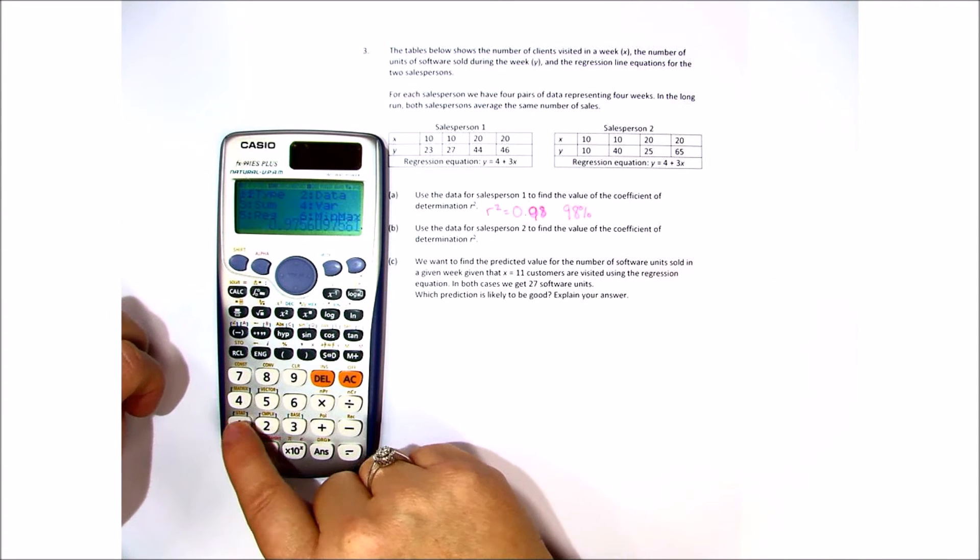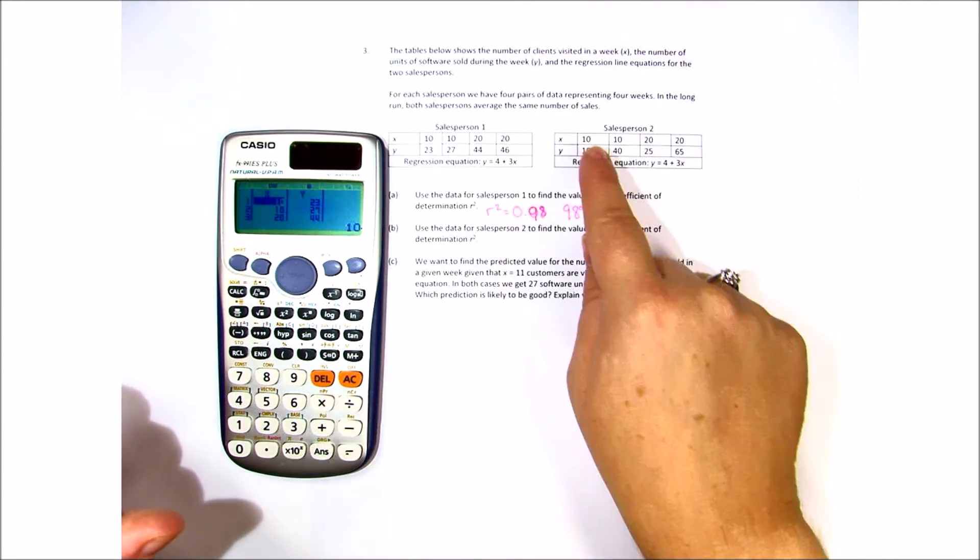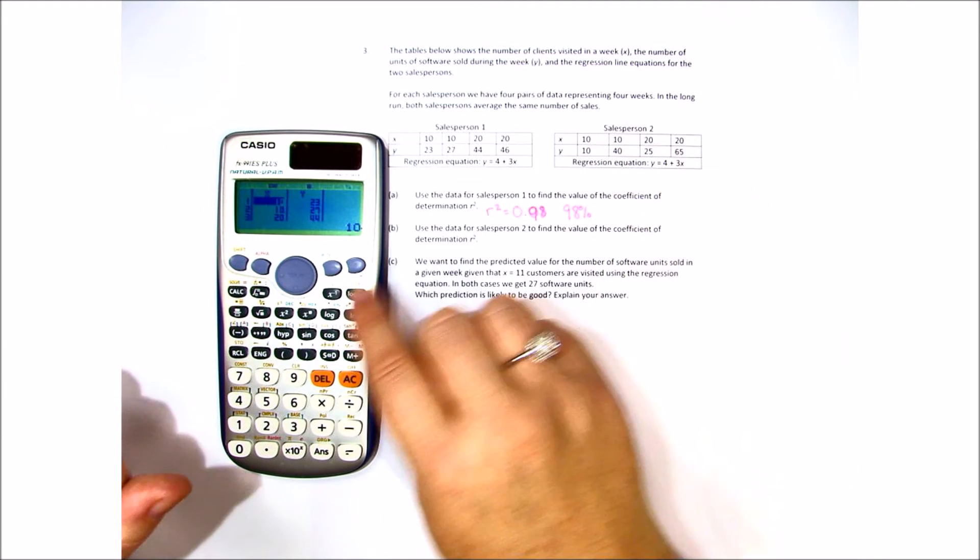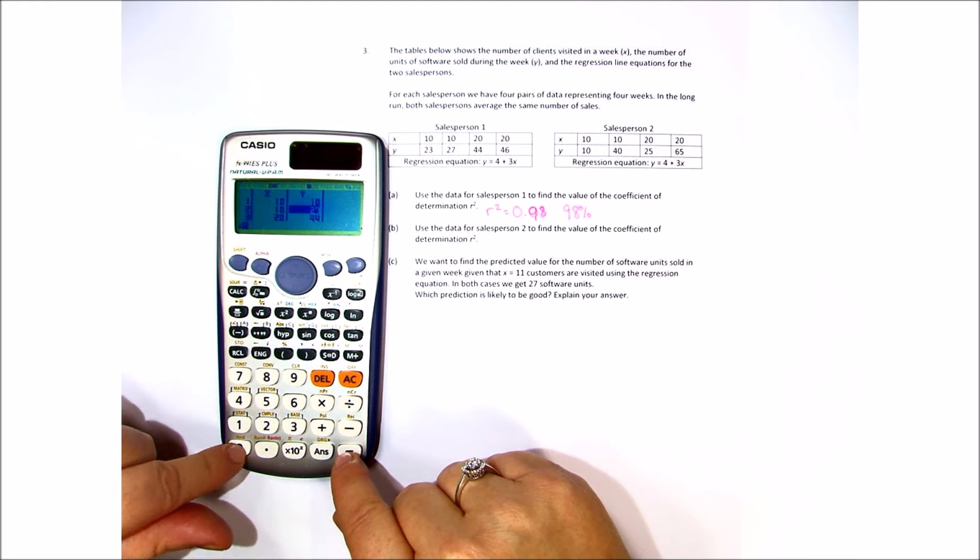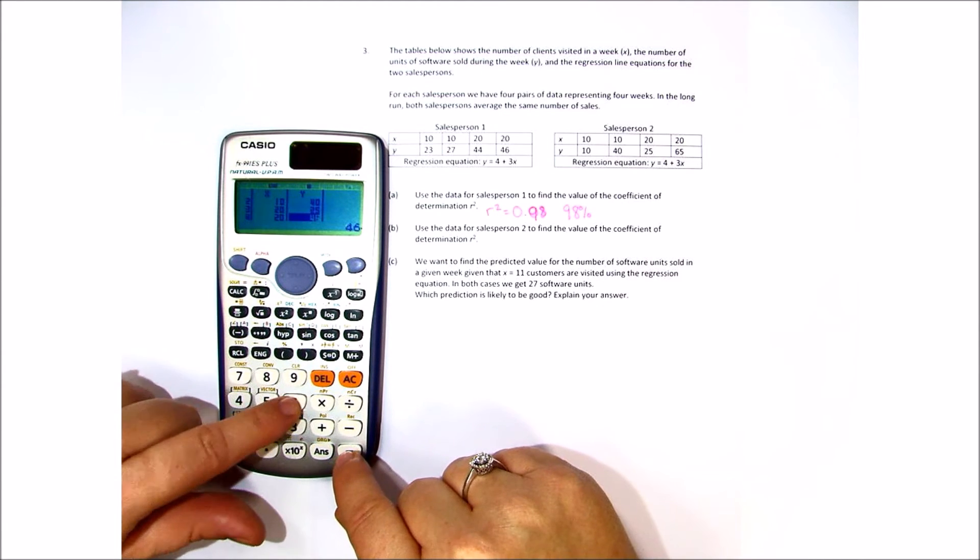So we're going to go shift 1 and we're just going to change our data. We have 10, 10, 20, 20 so the only thing we need to change is y 10, 40, 25 and 65.